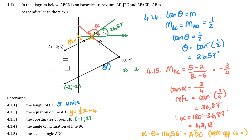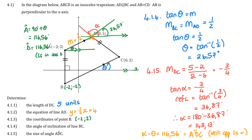Another approach: draw a horizontal line at A, making angle A equal to 90 degrees plus theta, which gives 116.56 degrees. Since the angles in an isosceles trapezium have equal top angles and equal bottom angles, angle D equals 116.56 degrees. Some people also work out lengths AD, DC, and AC and use the cosine rule — that's valid too.